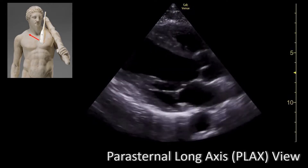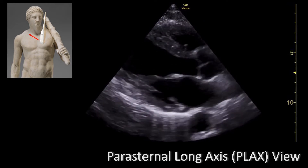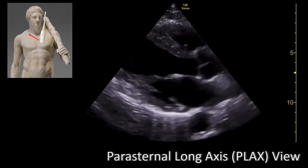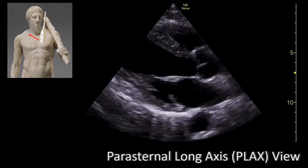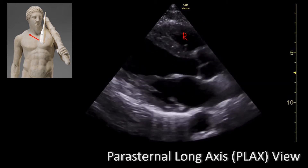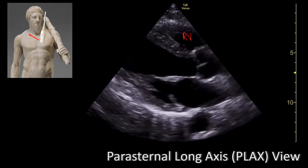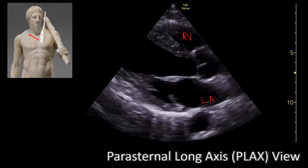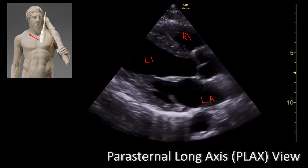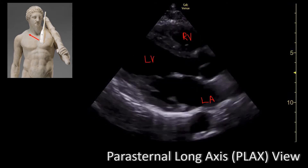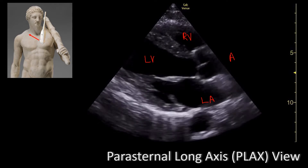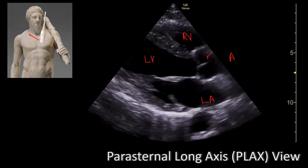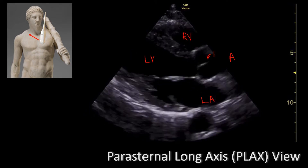In the parasternal long axis view, after you optimize your image, you should be looking at something like this. The first moving structure closer to your probe will be the right ventricle. On the other side, you have the left atrium, which empties into the left ventricle. The left ventricle will eject blood into the aorta. The structure that opens on systole is the aortic valve.